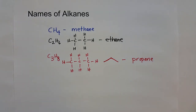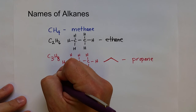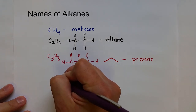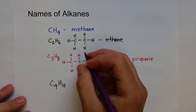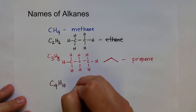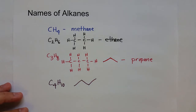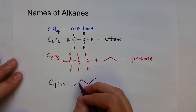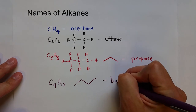Again, ending with -A-N-E to indicate that it's all carbons, all hydrogens, and all single bonds. Four carbons is C4H10, and that is butane. I'll go straight to the skeletal formula: one, two, three, four carbons — and that is butane.